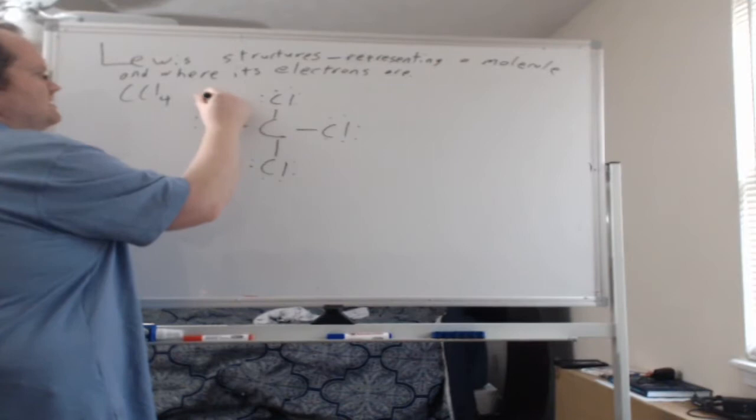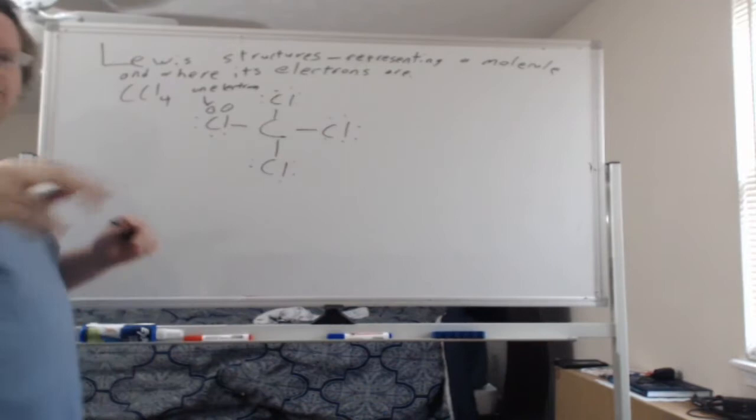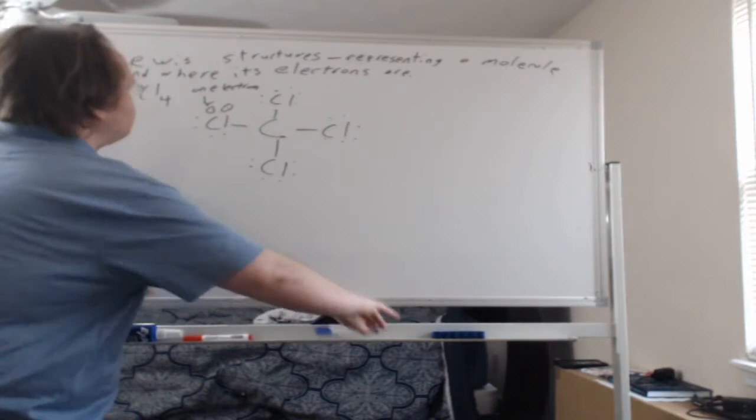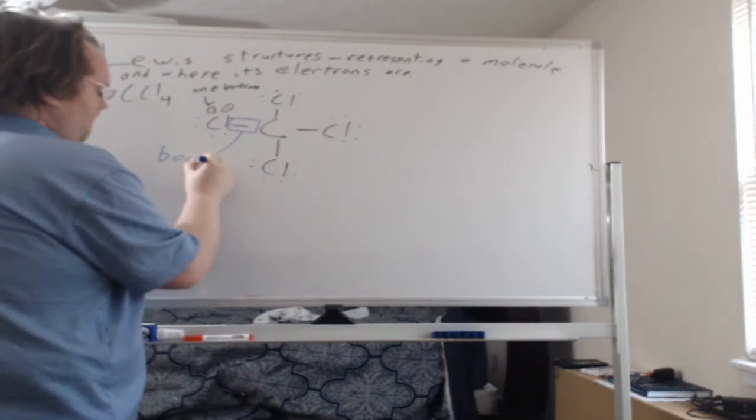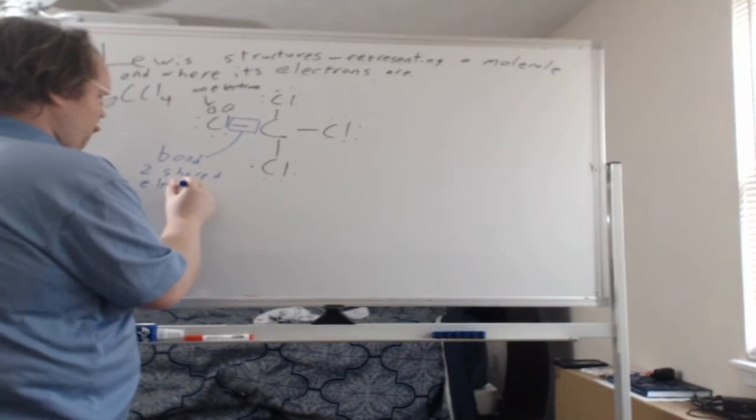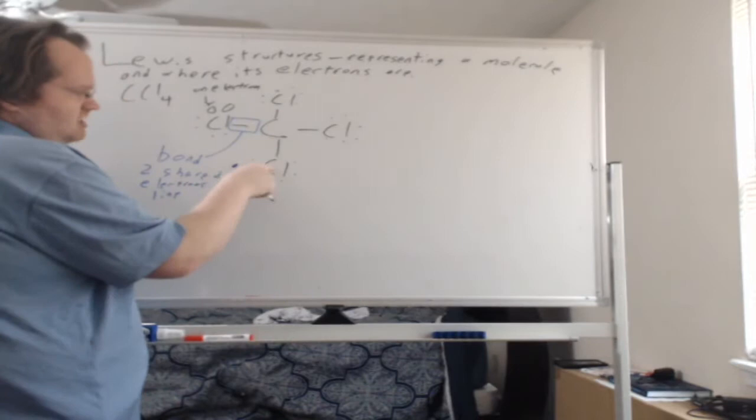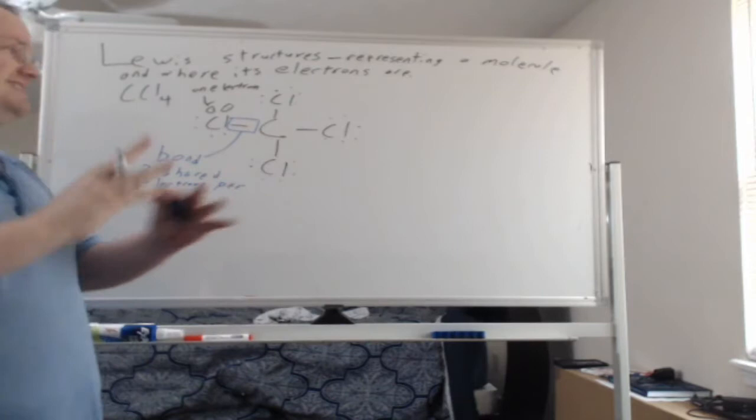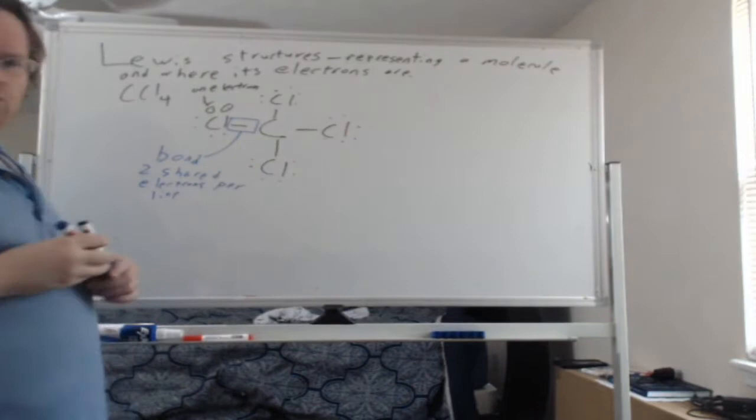Each of these dots here represents an electron and when we draw and if I've got two of them that'll represent a pair of electrons. These lines here, so you also have lines that occur between the atoms, that represents a bond which is two shared electrons per line. So the dots represent electrons that just exist on one atom.